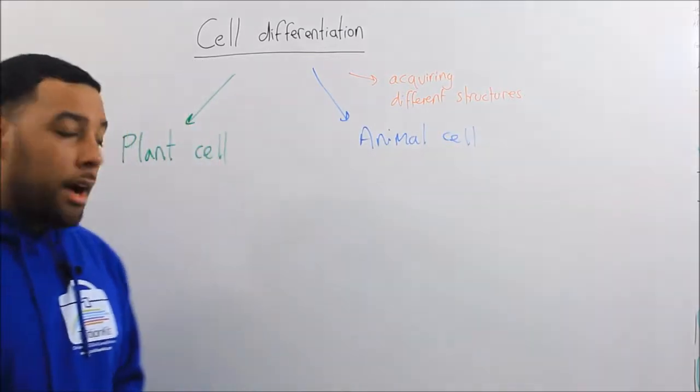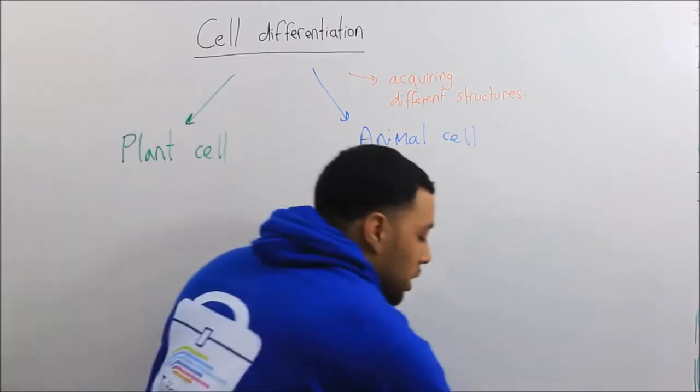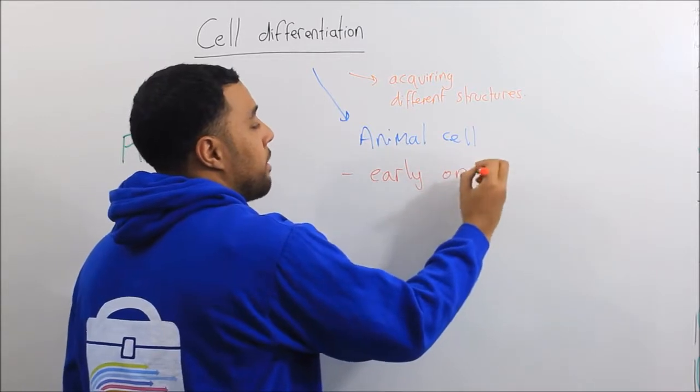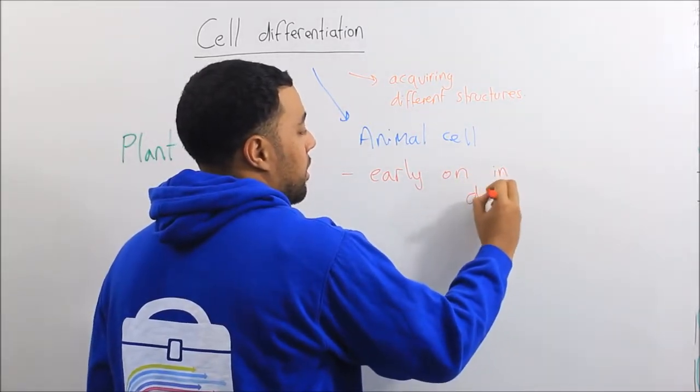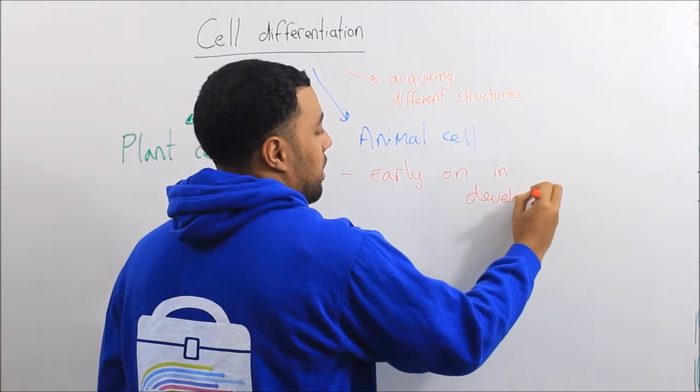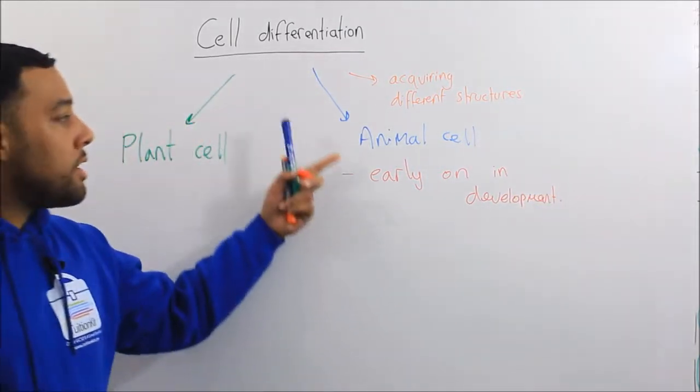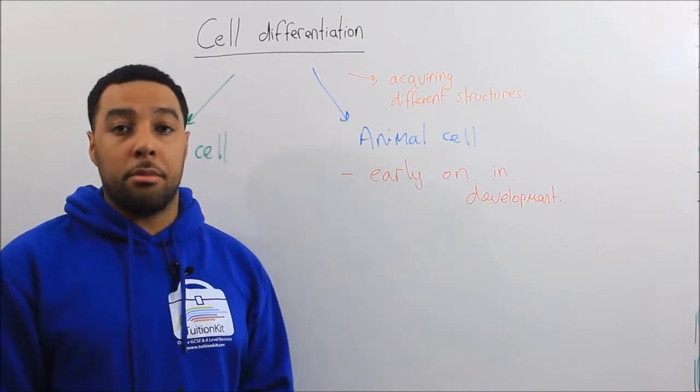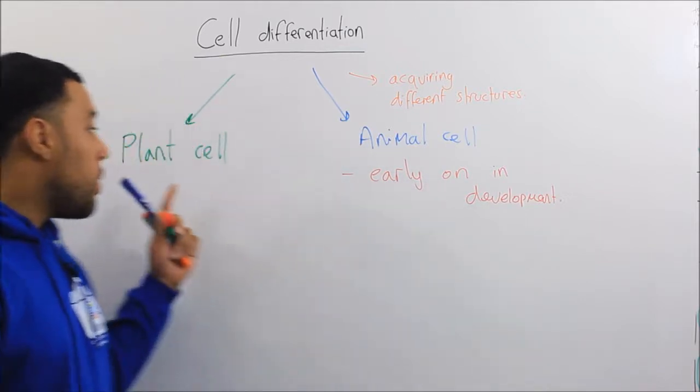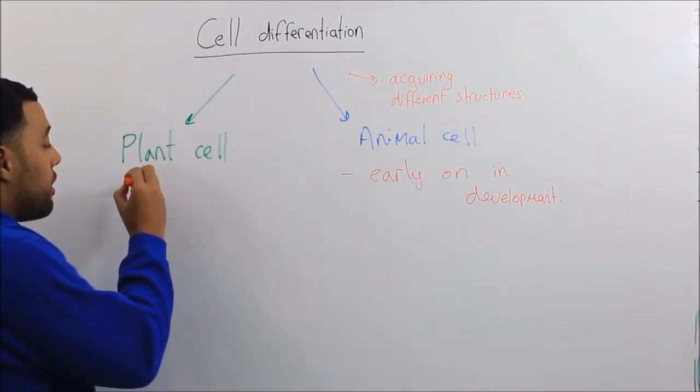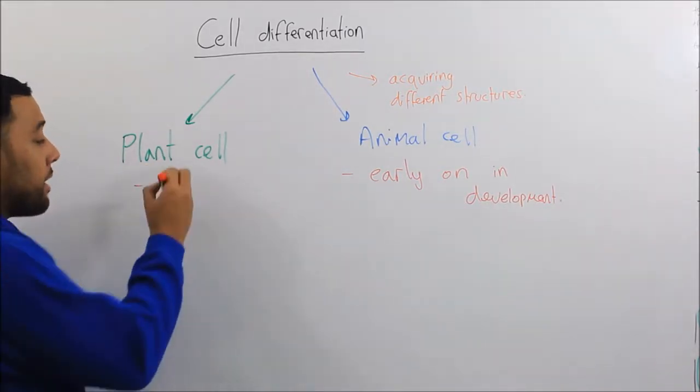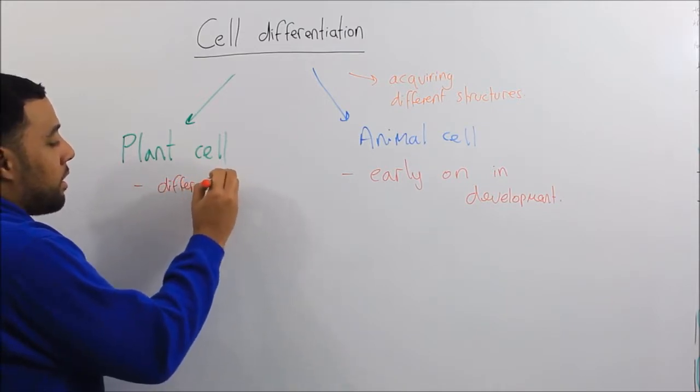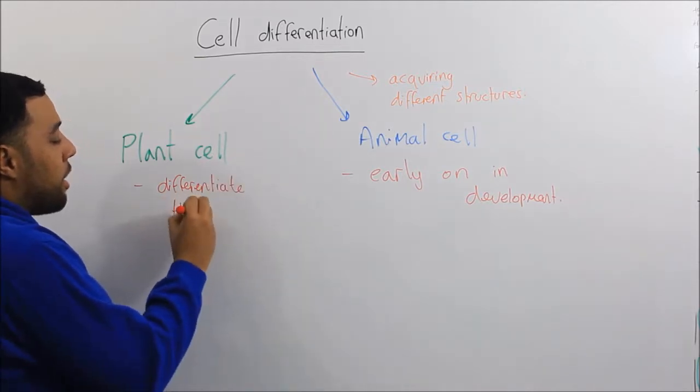Now animal cells will differentiate early on in their development. This means that the animal cell will acquire its different structures quite early on in its development stage, whereas the plant cell—many cells in the plant—can differentiate throughout their whole life.